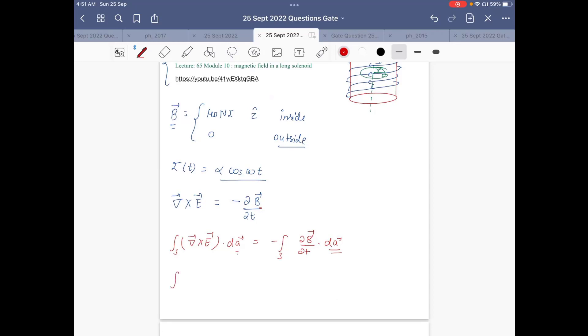Now in cylindrical coordinate system, if we take the dA vector, it's n̂ dA. So if we take Stokes' theorem here, it will be line integral of E dot dl equals minus surface integral of ∂B/∂t dot dA.